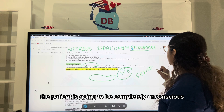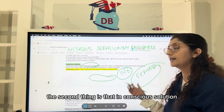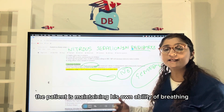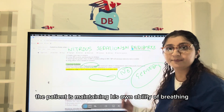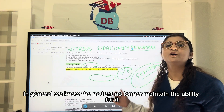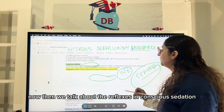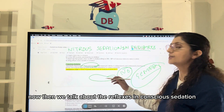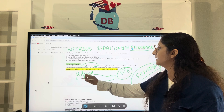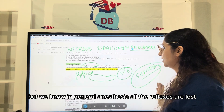In general anesthesia, the patient is completely unconscious. In conscious sedation, the patient maintains their own ability to breathe, whereas in general anesthesia the patient no longer maintains that ability. When it comes to reflexes, in conscious sedation the patient still maintains their own reflexes, but in general anesthesia all reflexes are lost.